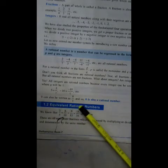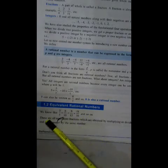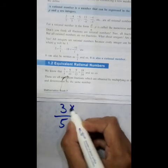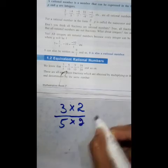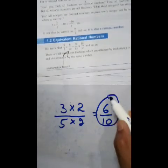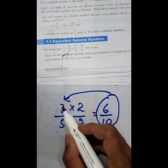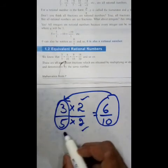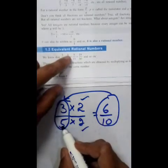Now dear students, let's move toward the concept of Equivalent Rational Numbers. We know that 3 by 5, 6 by 10, 9 by 15, 18 by 30 and so on are all equivalent fractions, which are obtained by multiplying or dividing both the numerator and denominator by the same number. For example, if we have 3 by 5 and multiply the numerator by 2 and the denominator by 2, we get 3 into 2 which is 6, and 5 into 2 which is 10. So 6 by 10 is equivalent to 3 by 5. Similarly, multiplying by 3, we get 9 by 15.